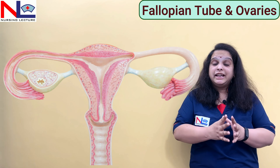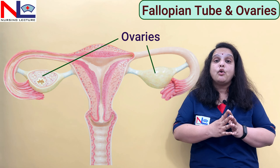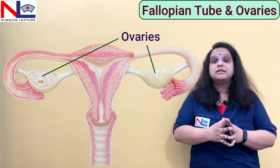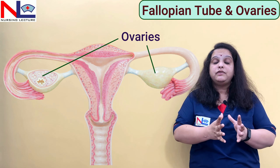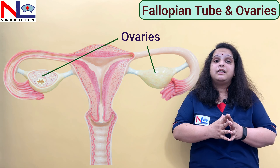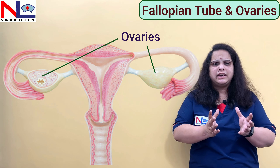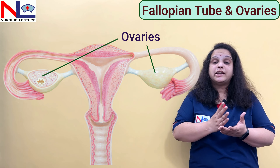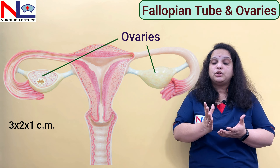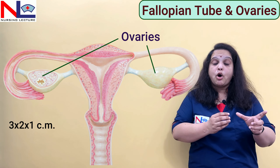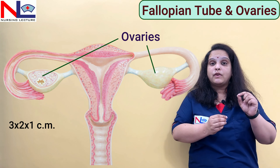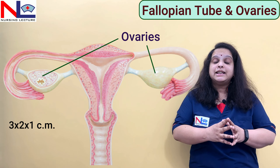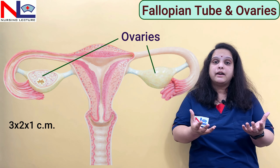The other internal genital organ is the ovaries. These are the paired sex glands, or gonads, in the female. They are oval or almond in shape with dimensions of about 3×2×1 cm — 3 cm long, 2 cm wide, and 1 cm thick. The ovaries lie within the ovarian fossa in the lateral pelvic wall.